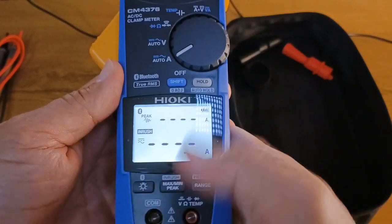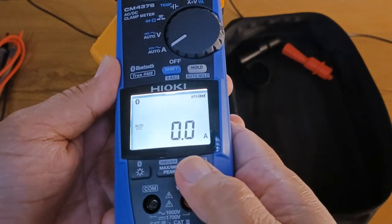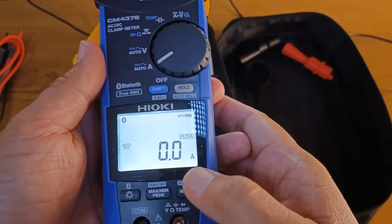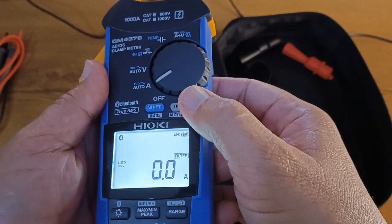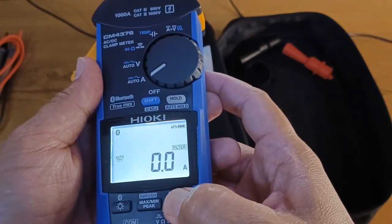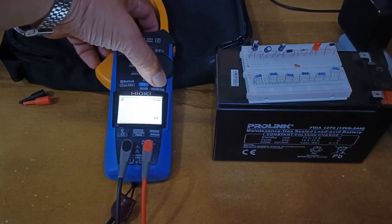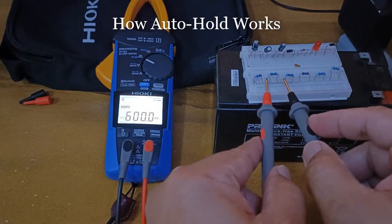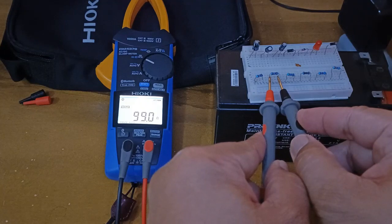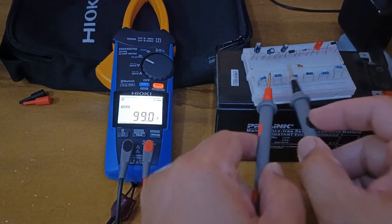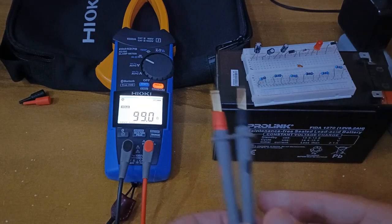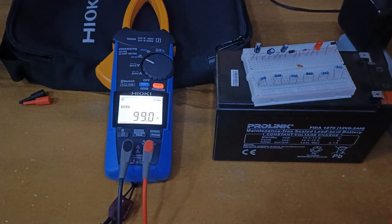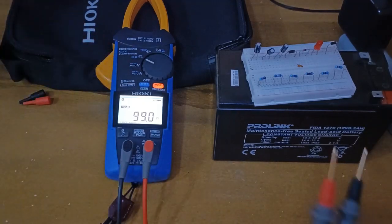It also has a filter function, which filters out unnecessary frequencies, so you get accurate results. The 4376 is equipped with the normal hold button and the auto hold button. By long pressing this hold button, I will engage the auto hold function. Once the parameter stabilizes, I can remove the test leads from the test points and the value will be retained on the screen. So this makes the auto hold function very convenient.